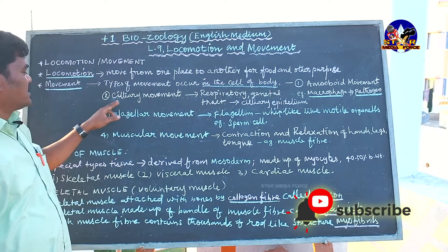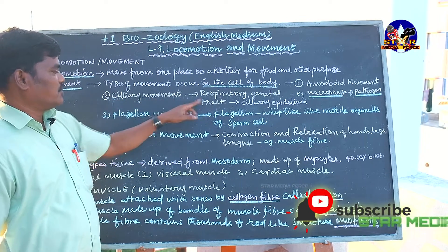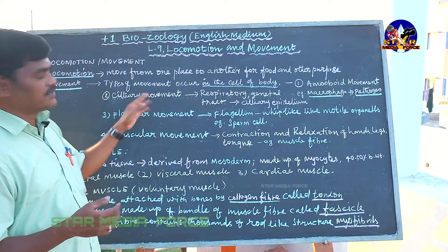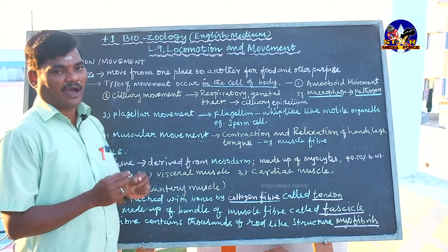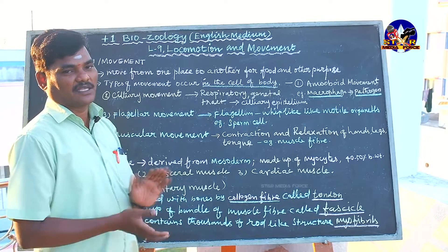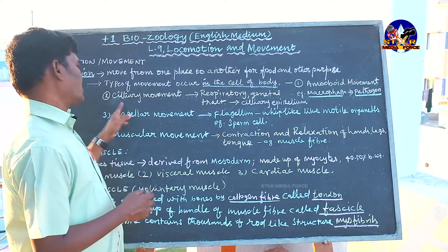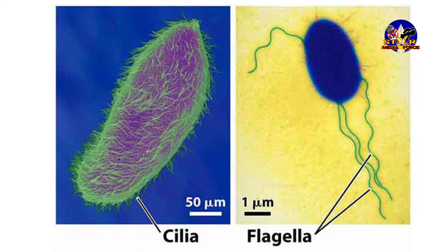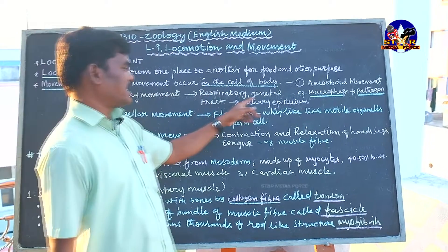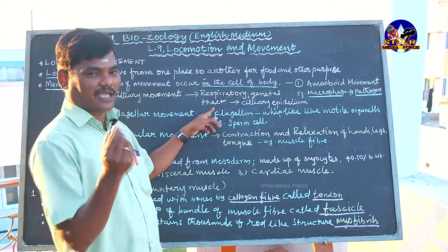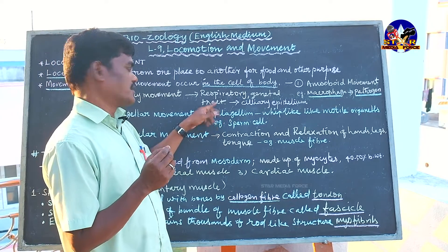The second type is ciliary movement. In lower animals, there are two types of locomotory organs: cilia and flagellum. Cilia are short, hair-like structures. Ciliary movement occurs in our respiratory and genital tracts. Inside the respiratory tract, there are minute hair-like projections called cilia.